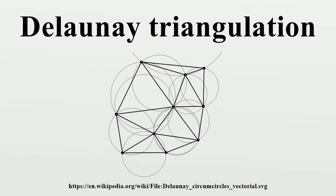Let n be the number of points and d the number of dimensions. The union of all simplices in the triangulation is the convex hull of the points. The Delaunay triangulation contains O(n^⌈d/2⌉) simplices. In the plane, if there are b vertices on the convex hull, then any triangulation of the points has at most 2n−2−b triangles, plus one exterior face. In the plane, each vertex has on average six surrounding triangles.